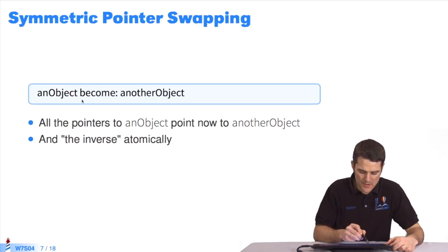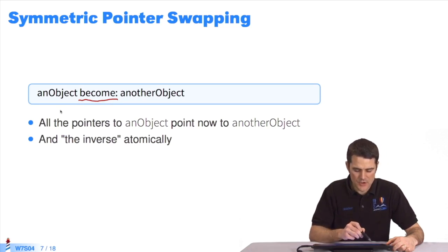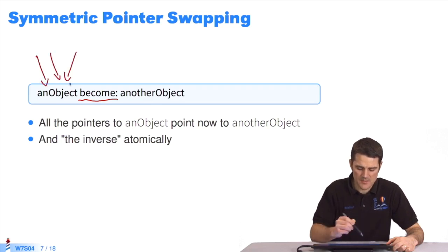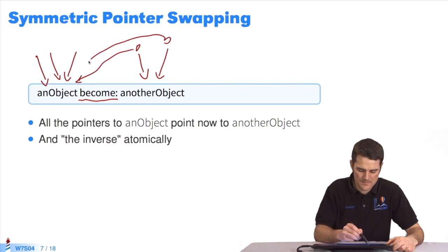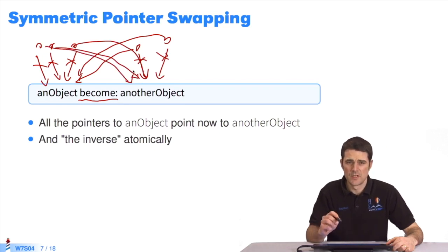The primitive for swapping pointers is become. The idea is to enable us to exchange two objects. We want to swap them symmetrically. Everything that pointed to this object in the system, in this case we have two pointers, will be inverted so that the elements now point to this object. We break the links for the pointers that were on this side, so they switch objects. Become means to invert all pointers in the system symmetrically.